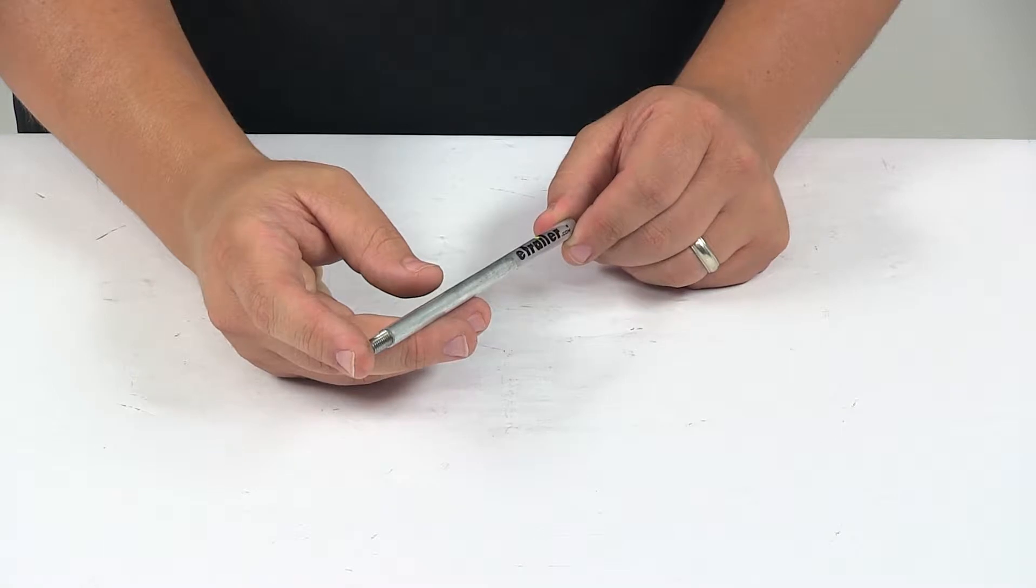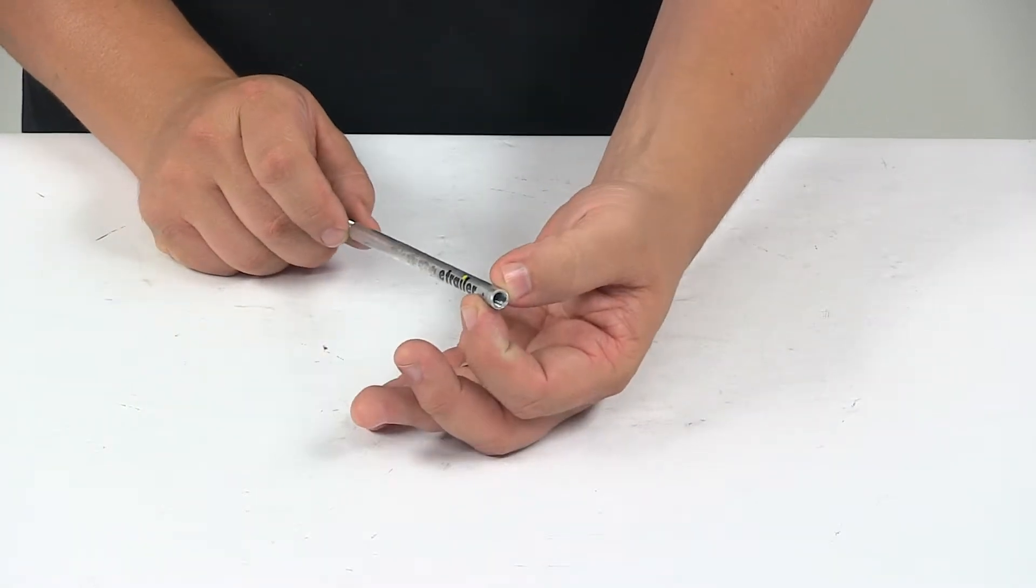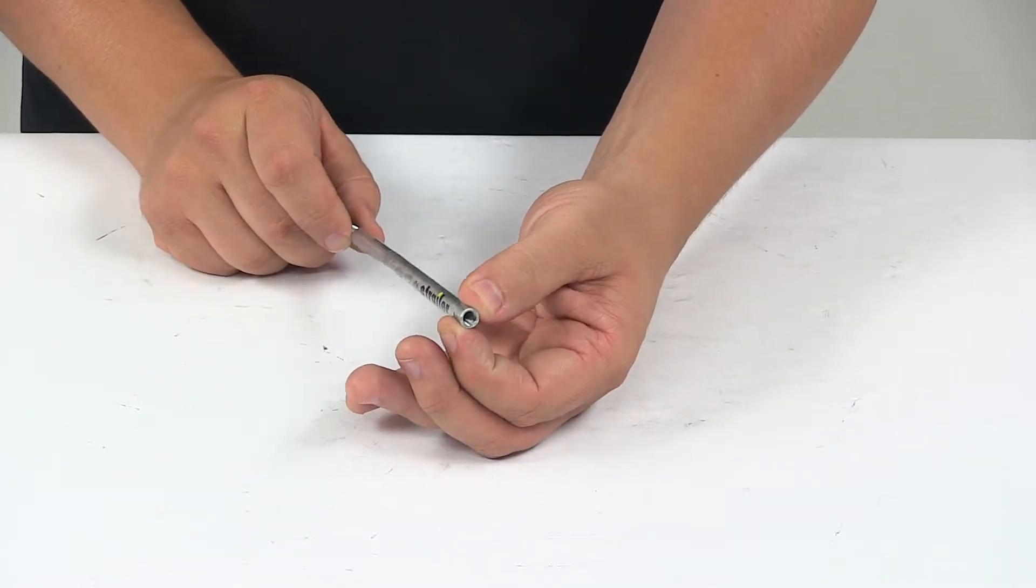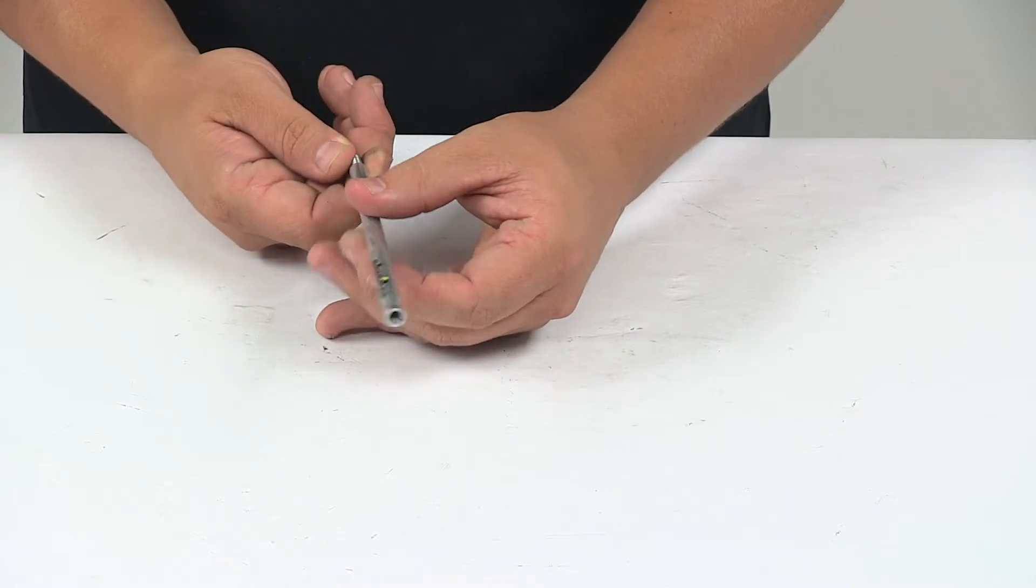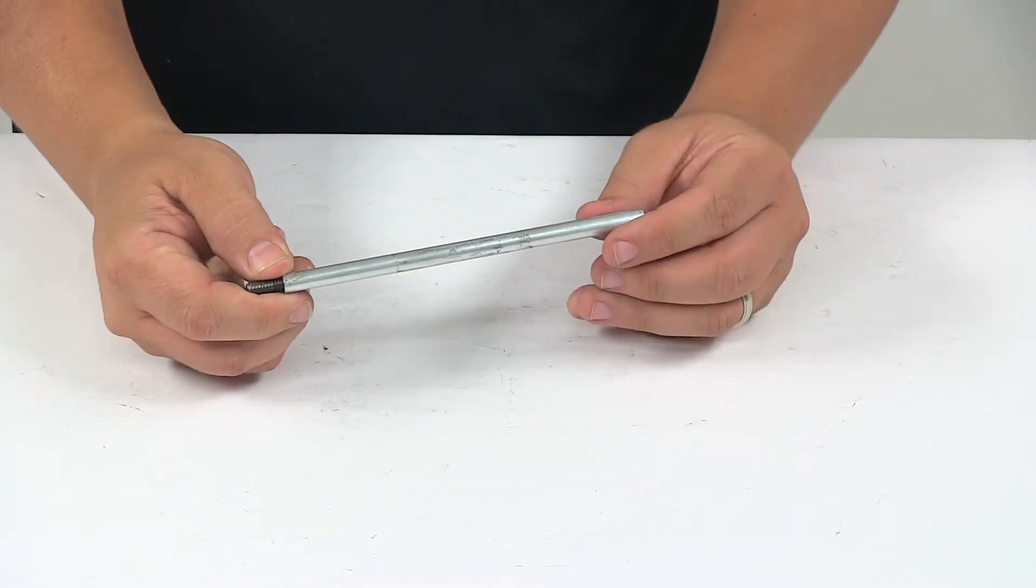The male pipe thread threads into the valve handle. The female pipe thread threads onto the blade rod. It's an aluminum construction, so it's very strong, durable, and corrosion-resistant.